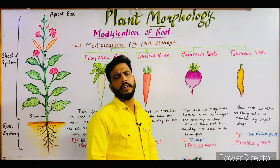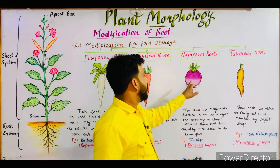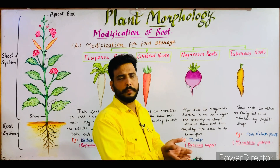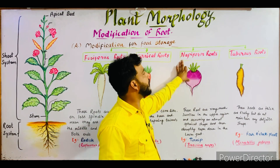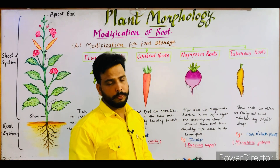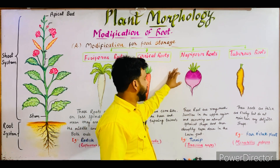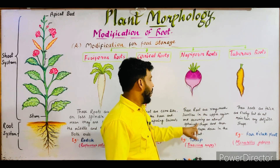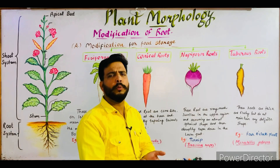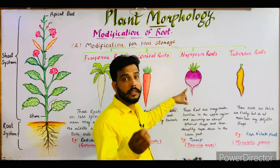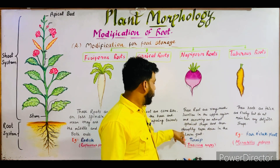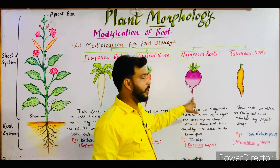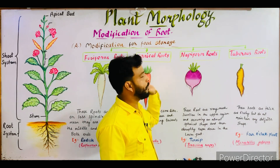The next type is napiform roots. Napiform roots appear like a pot — they are almost spherical in the upper region and then abruptly taper down at the apex. As you can see here in turnip and sugar beet, the root is very swollen and nearly spherical in the upper part, then suddenly tapers down towards the apex in the lower part.